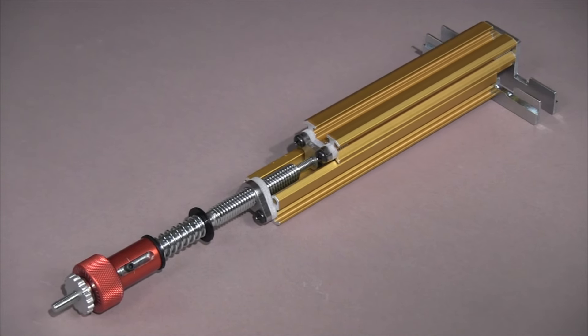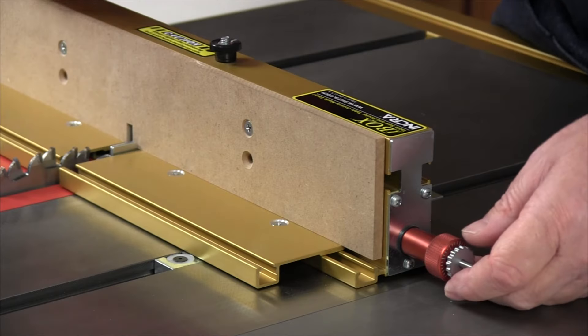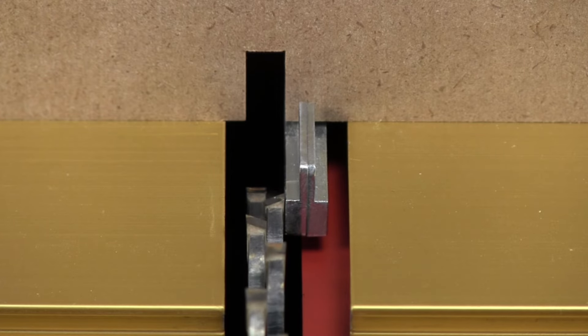But the real magic is in the iBox pin plate positioning mechanism. Just loosen the locking knob and zero the pin plates to your cutter. We call this KISS calibration.